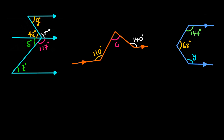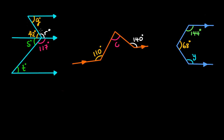The angle Q is equal to the angle 42 degrees because the angles are alternate angles. This line is a parallel line, this line is also a parallel line, and the line touching the two parallel lines is called the transversal. When you have something like Z, the angle here and the angle here are alternate angles, and alternate angles are equal. So the angle Q is equal to 42 degrees — alternate angles.